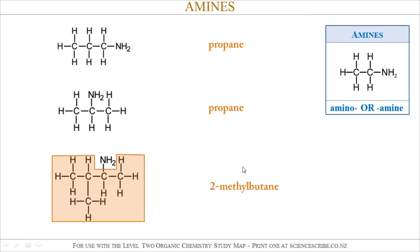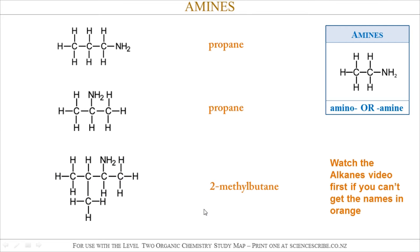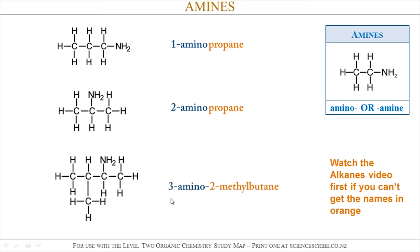If you're not sure how to name alkanes I suggest you watch the alkanes video first before going any further with naming amines. In the first example the amine functional group is at the first carbon atom, so using the amino prefix I could call this 1-aminopropane. In the second example the functional group is on the second carbon atom so that's 2-aminopropane. In the third example the amine functional group is at the third position so it's 3-amino-2-methylbutane.